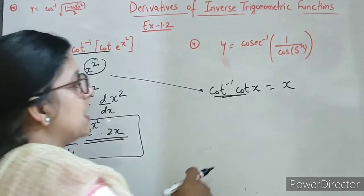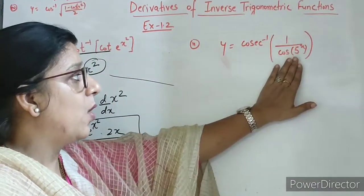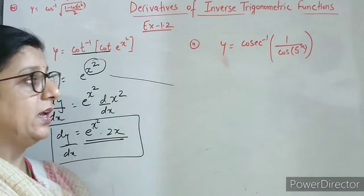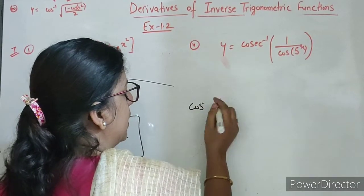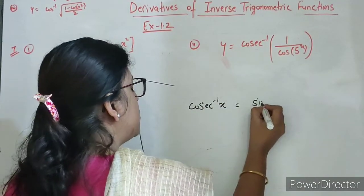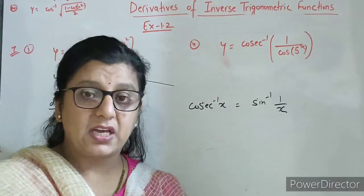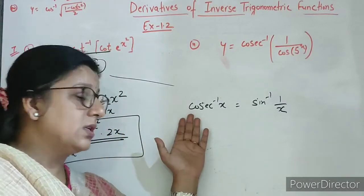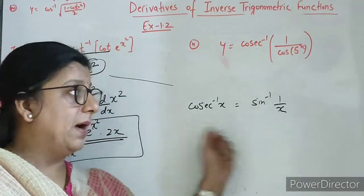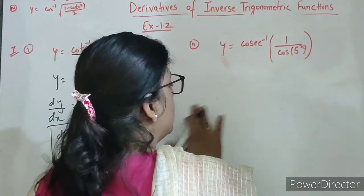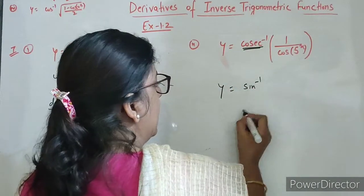Now come to second question, it is y equals to cot inverse of 1 upon cos 5 to the power x. Again, which property we have to use? Cosec inverse x — we will change into sin inverse. Cosec ko hum change karenge sin mein, and you know that cosec inverse x can be written as sin inverse 1 by x. So using this property, cosec ko likhenge sin inverse.